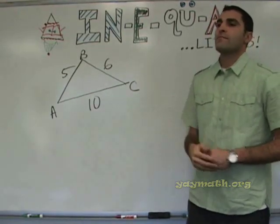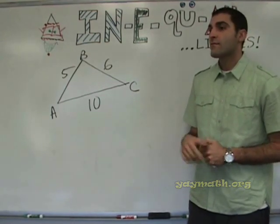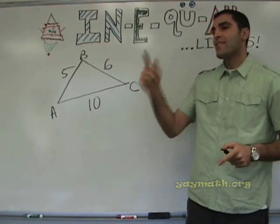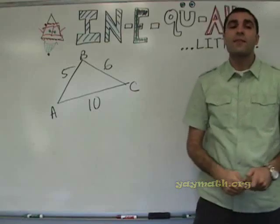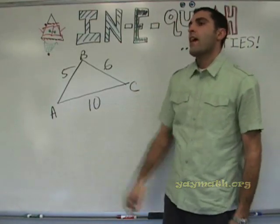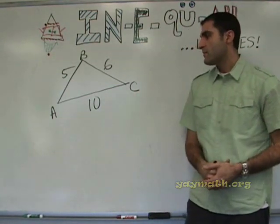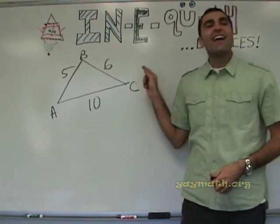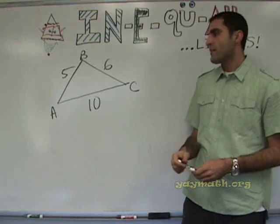What is the medium side? BC. And so what is the medium angle? Angle A, right. And what is the largest side? AC, right. And what is the biggest angle then? Angle B, right.